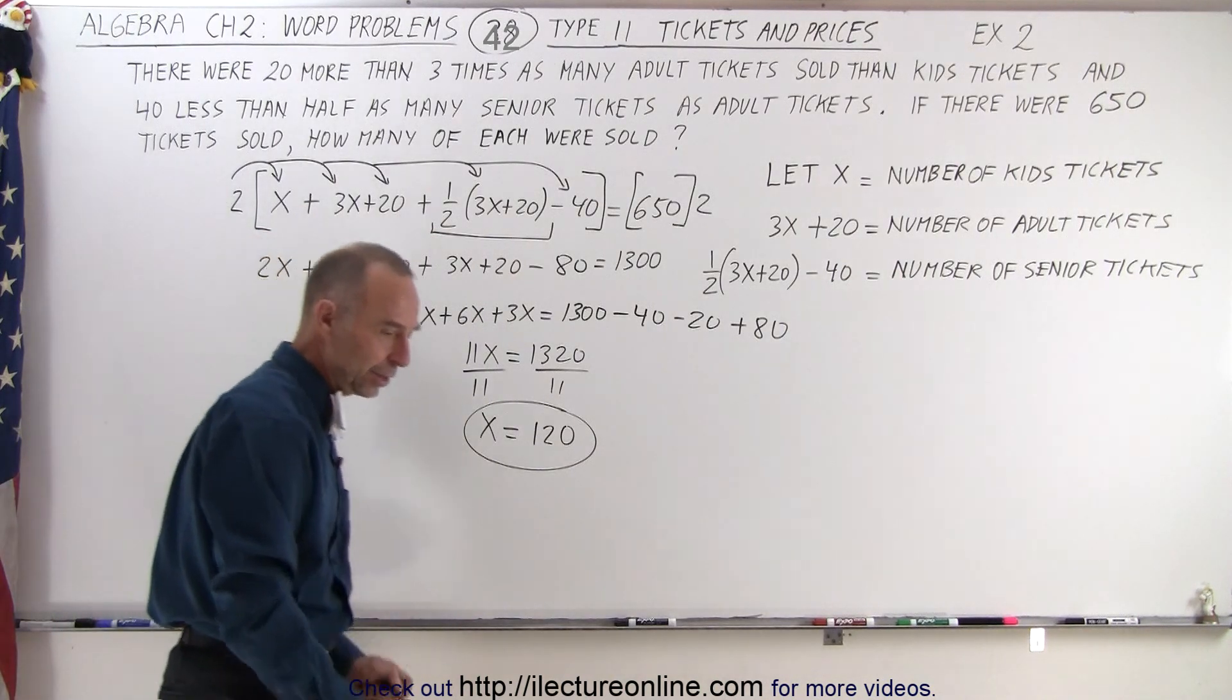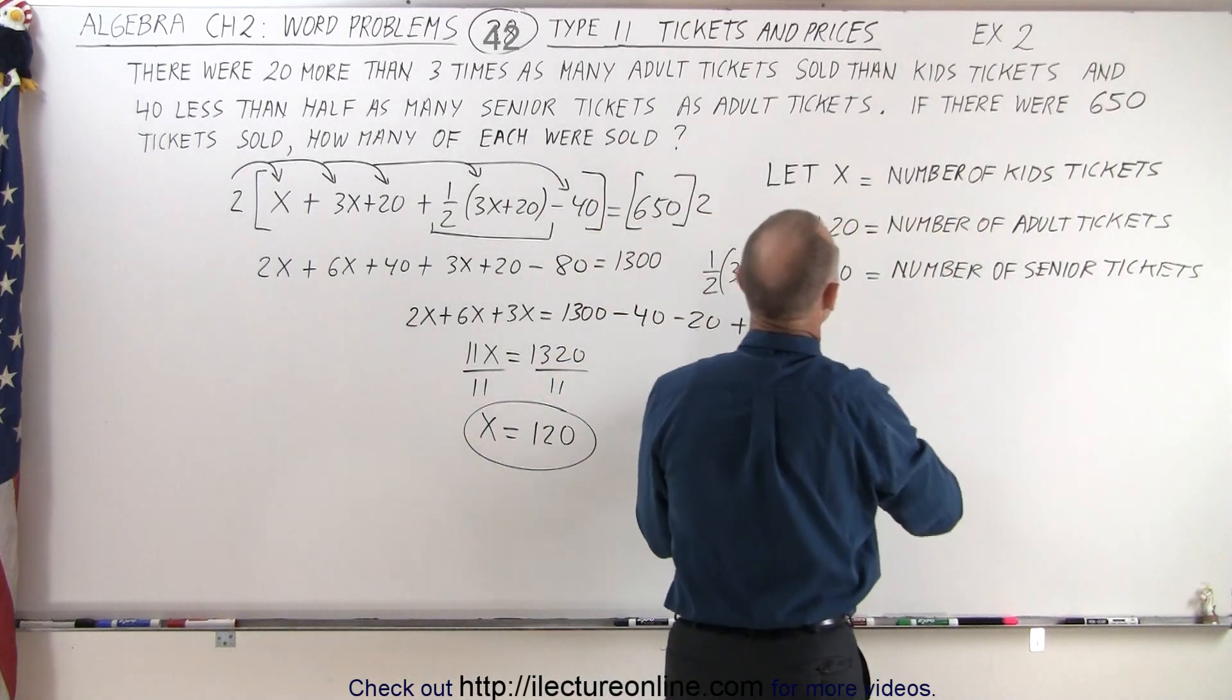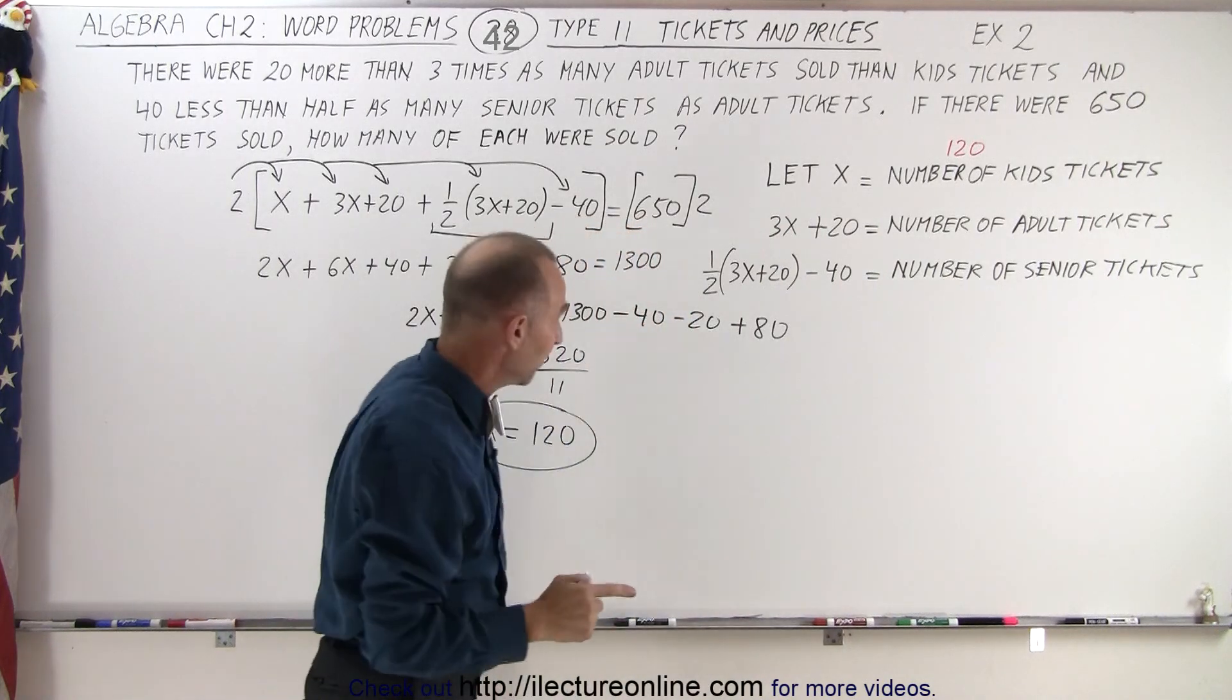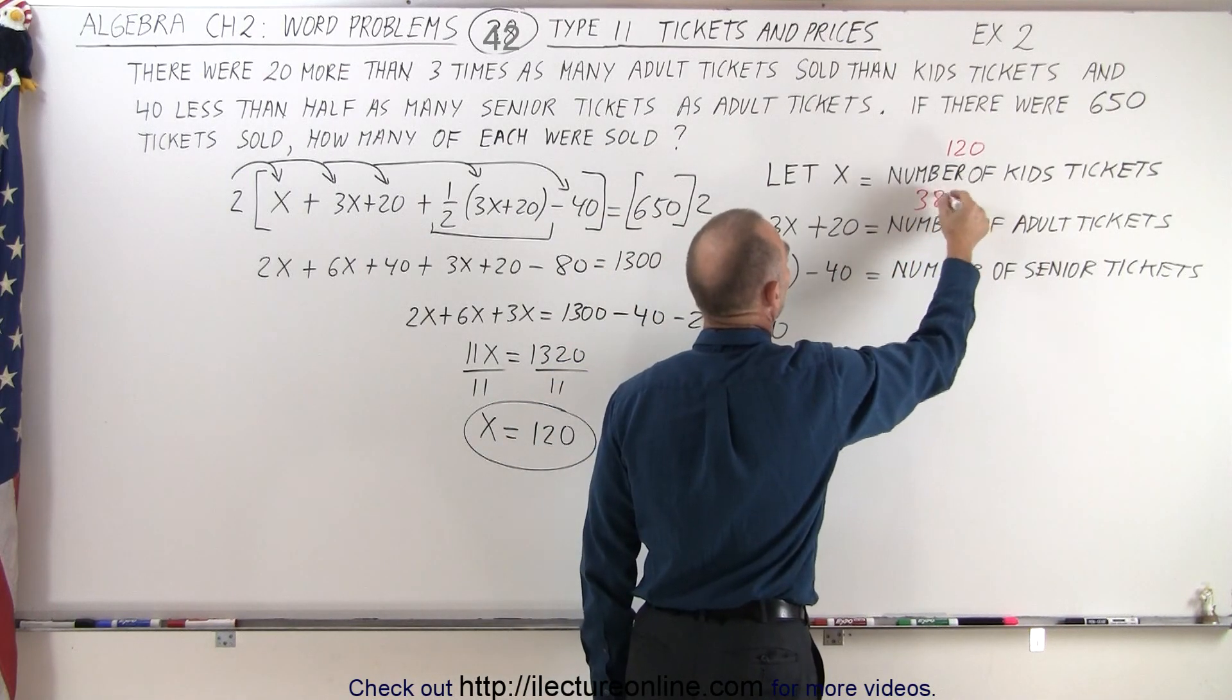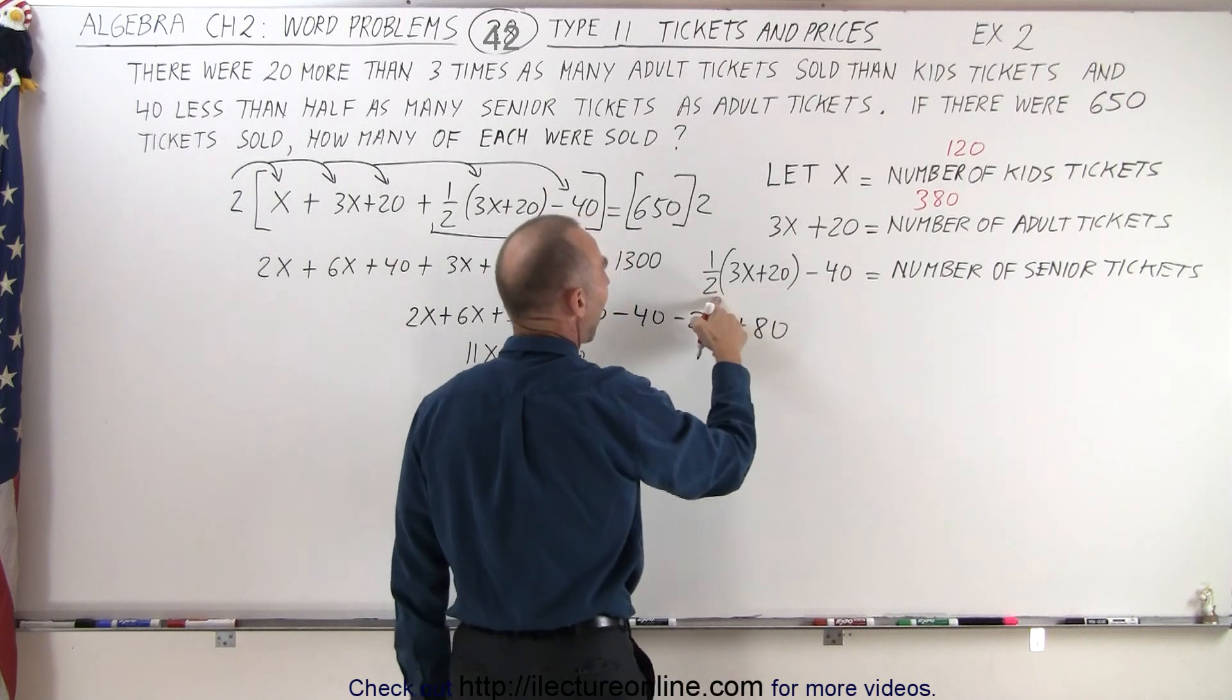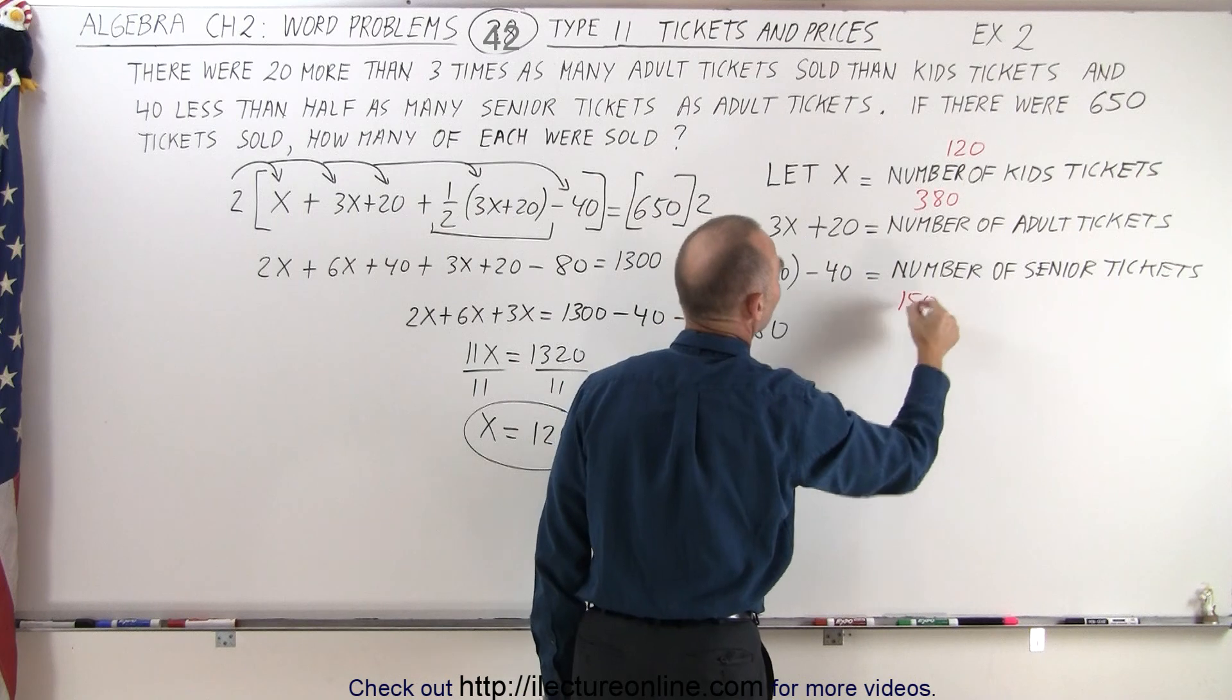Now what does that mean? We need to go back to how we define x. Notice x is the number of kids tickets, that means we have 120 kids tickets. 3x + 20: three times 120 is 360, plus 20 means 380 adult tickets. And finally, half as many minus 40: half of 380 is 190, minus 40 is 150 senior tickets.